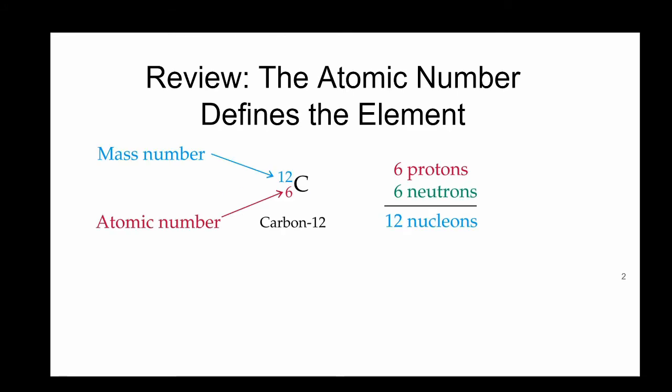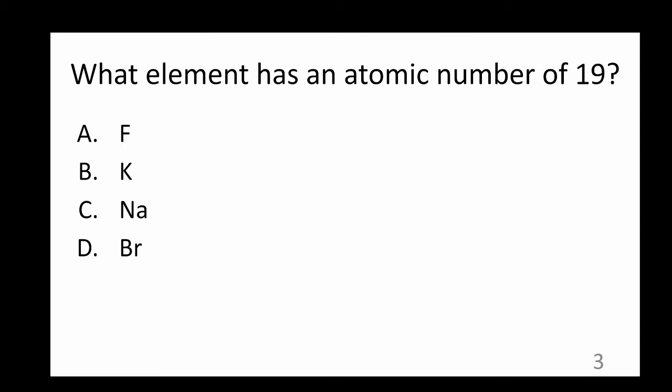Remember the atomic number defines the element. When discussing nuclear reactions, you'll see element symbols written like this. The atomic number, or the number of protons, is written as a subscript to the left of the symbol. The mass number, which is the number of protons plus the number of neutrons, is written as a superscript to the left of the symbol. Since protons and neutrons are both found in the nucleus, we call them nucleons.